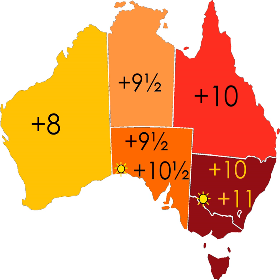Western Australia has also had a particularly involved debate over DST, with the issue being put to a referendum four times: in 1975, 1984, 1992, and 2009. All of these proposals to adopt DST were defeated. Voters registered a negative vote of 54.6% in the 2009 referendum, the highest percentage across all four referendums. Each referendum followed a trial period during which the state observed DST. The first three followed a one-year trial, while the 2006 Western Australian Daylight Saving Bill 2006 instituted a three-year trial of DST beginning on 3 December 2006.